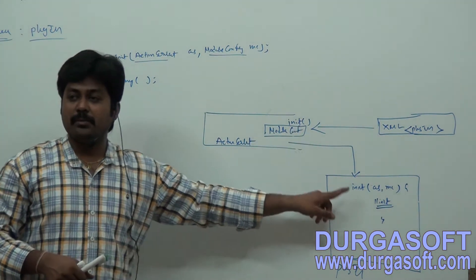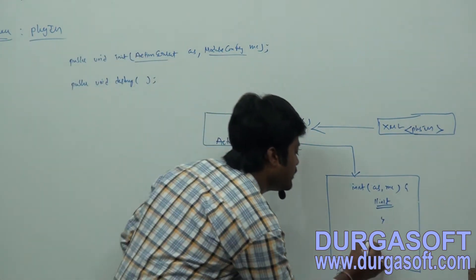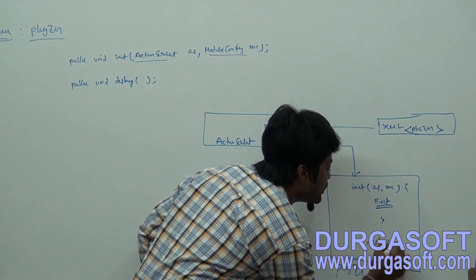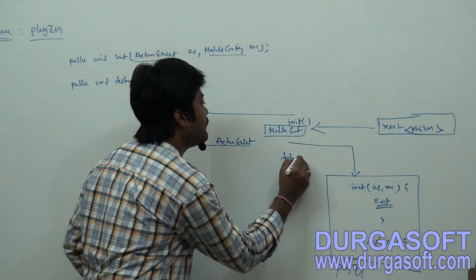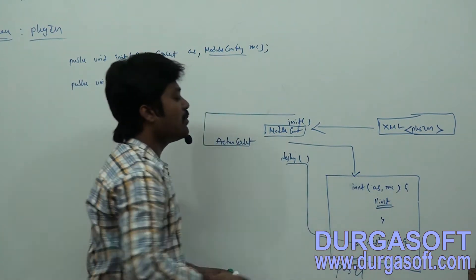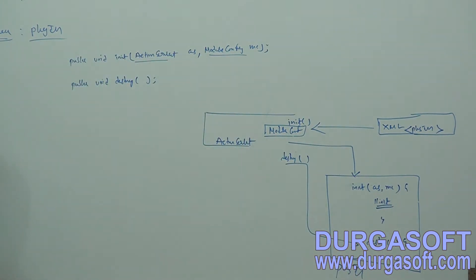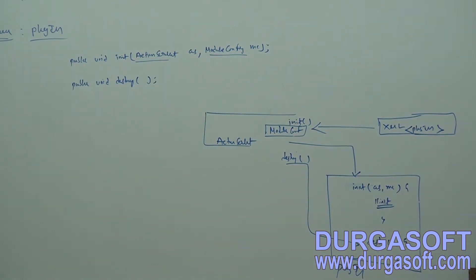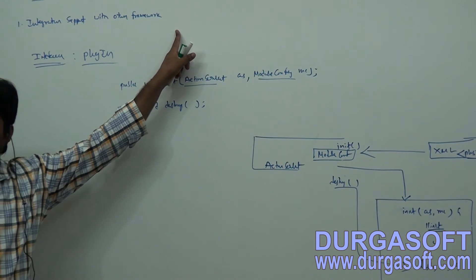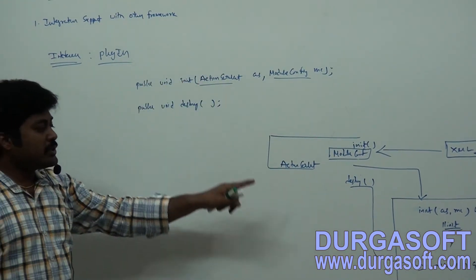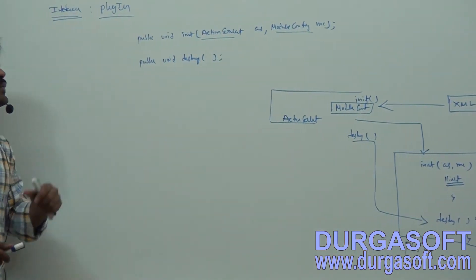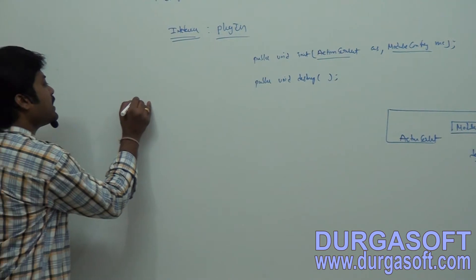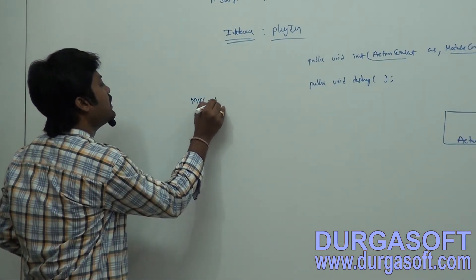Whatever code you write in the plugin class init method is similar to your servlet init method — it executes along with your ActionServlet init method. You should also write a destroy method. When your ActionServlet destroy method executes, it will call the plugin class destroy method. Using this plugin class, we need to provide integration support to other frameworks.